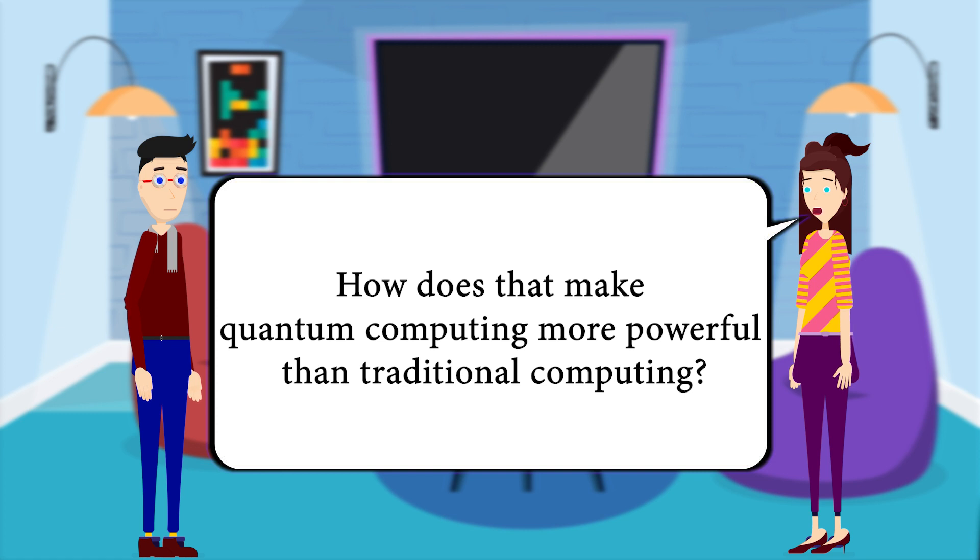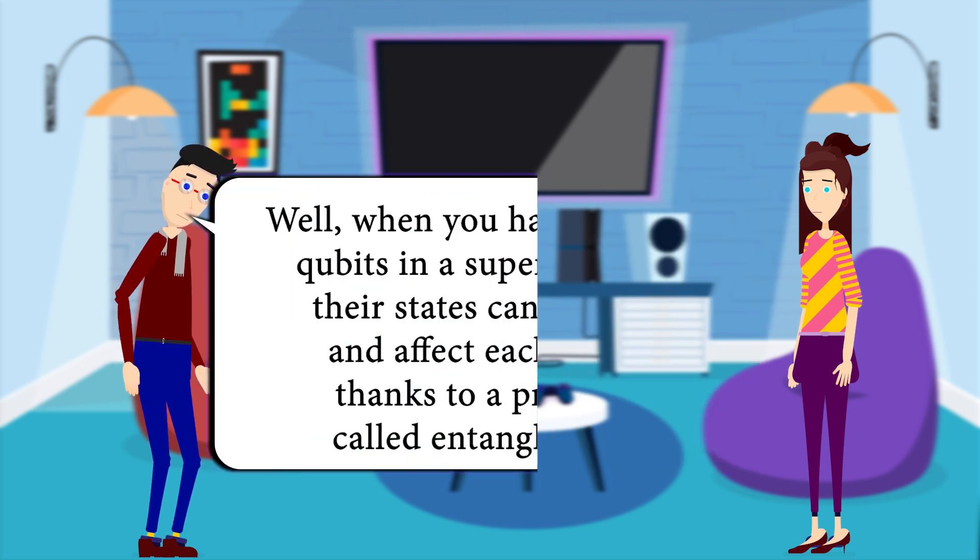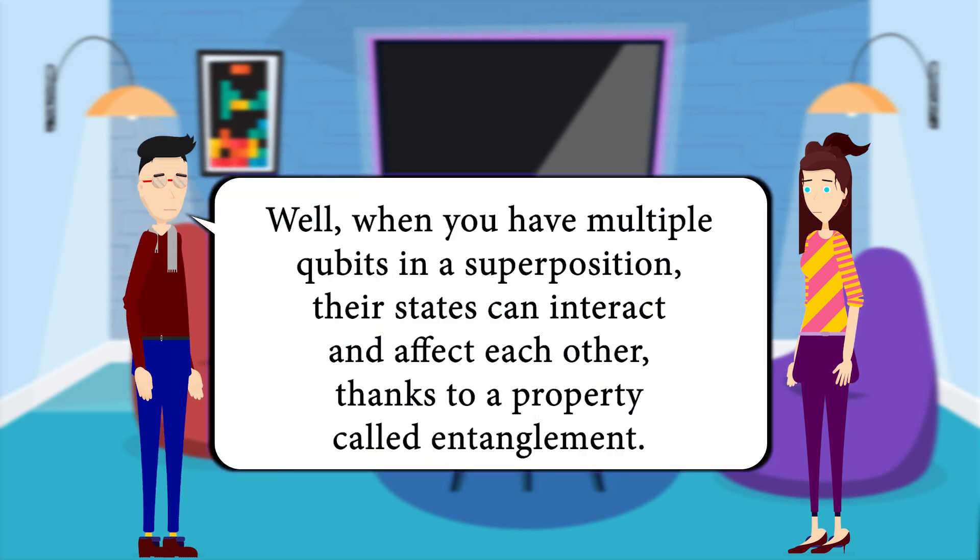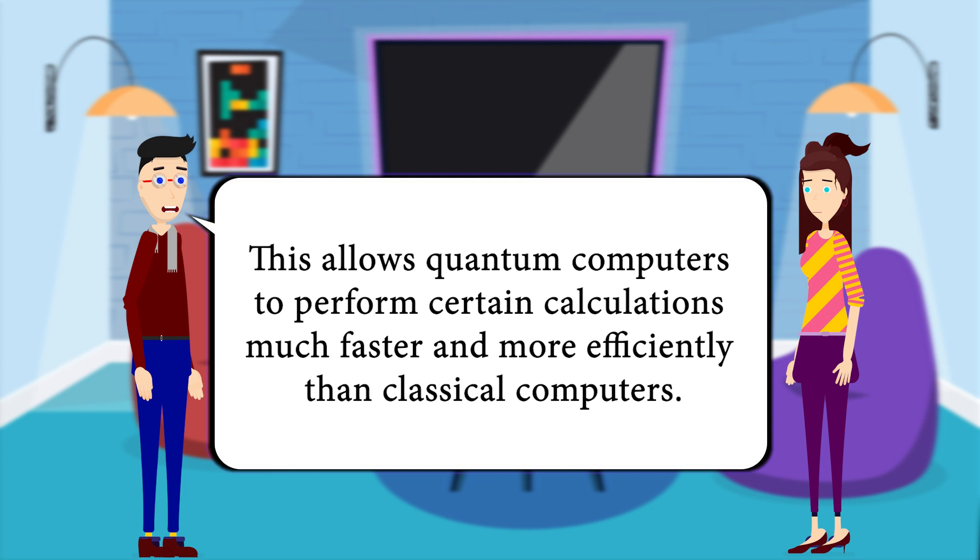How does that make quantum computing more powerful than traditional computing? Well, when you have multiple qubits in a superposition, their states can interact and affect each other thanks to a property called entanglement. This allows quantum computers to perform certain calculations much faster and more efficiently than classical computers.